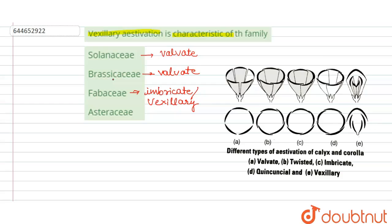So when we come to the Asteraceae family, it is the sunflower family. The sunflower family usually have the flowers which are pentamerous and epigynous